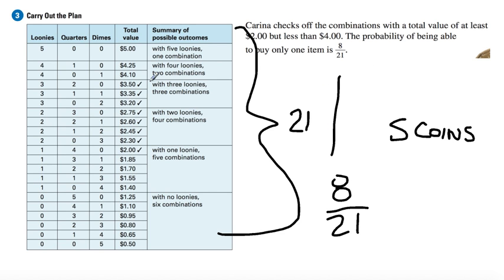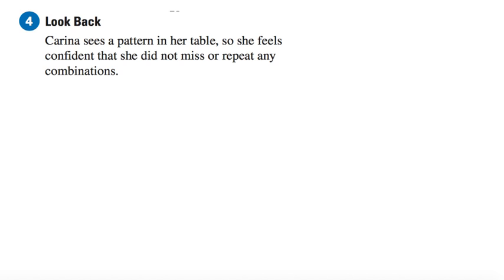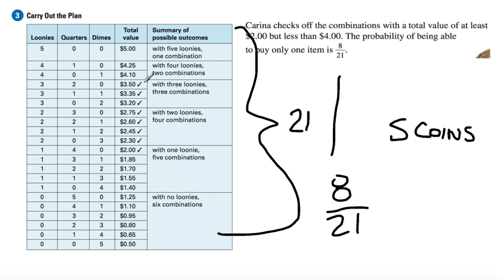Okay, so this is what would be favorable right here: less than four dollars, more than two dollars. All right, so Carina sees a pattern in the table, so she feels confident that she did not miss or repeat any combinations. Go back and review all of the outcomes. It's basically the four steps of problem solving is what we're looking at here.